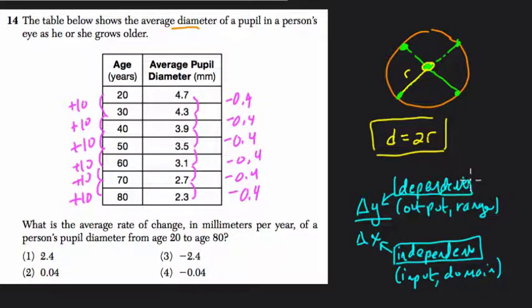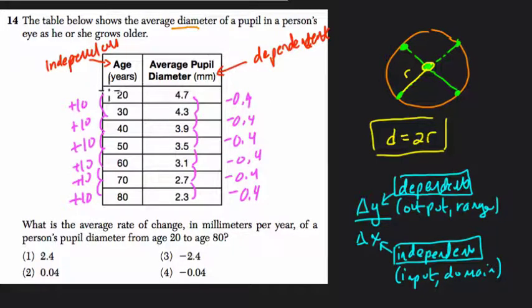So to figure out your slope, you have to establish what is the independent and dependent variable. Typically, in most of these problems, time will be independent. Because, as you can see here, you want to think about it this way. This diameter of your pupil is dependent. Say it in a sentence. Diameter of your pupil is dependent on the amount of years that has passed.